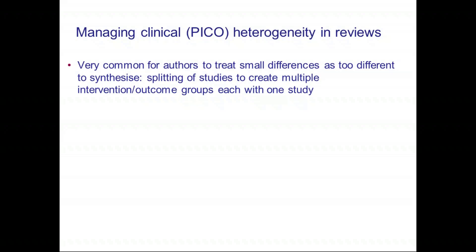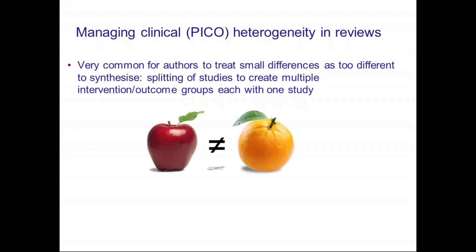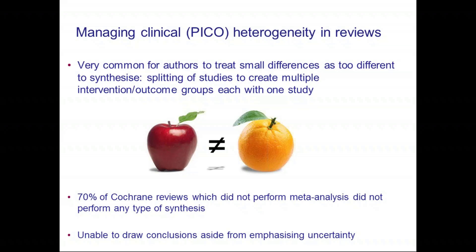The difficulty with this is that you end up with a review that splits up studies, ending up with only one or two studies in each outcome group. When we looked at these Cochrane reviews, we found that 70% of reviews that didn't perform meta-analysis actually didn't perform any type of synthesis, because they considered the outcomes or interventions in each study to be too different. Although this might not be criticized from an orthodox methods point of view, you have so little evidence in each group that you can't draw any conclusions apart from saying there's not enough evidence — and it's worth asking how useful that is.